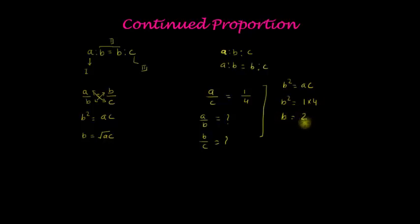So b will be equal to 2, and then a is to b can be written as 1 by 2, and b is to c can be written as 2 by 4, or this is also equal to 1 into 2.